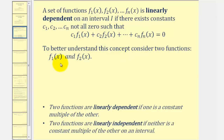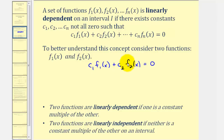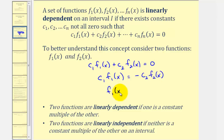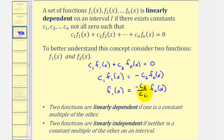To better understand this concept, let's consider two functions f₁ and f₂ that are linearly dependent, which means c₁·f₁(x) + c₂·f₂(x) = 0. Solving for f₁(x): subtracting gives c₁·f₁(x) = −c₂·f₂(x), then dividing by c₁ gives f₁(x) = (−c₂/c₁)·f₂(x), which is just a constant multiple of f₂. So two functions are linearly dependent if one is a constant multiple of the other, and linearly independent if neither is a constant multiple of the other on a given interval.